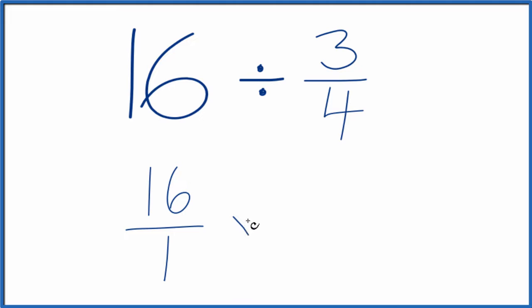Instead of division, let's multiply by the reciprocal of 3 fourths. So to take the reciprocal of a number, you move the numerator to the bottom and the denominator up top. So we have 4 over 3. That's the reciprocal of 3 fourths.